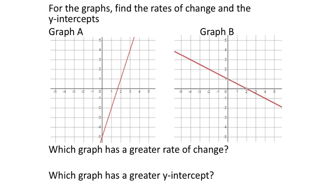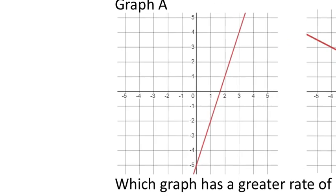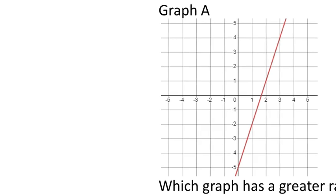We want to find the rates of change for both graphs A and B. These are straight lines, so no interval is given—the slope is the same everywhere on straight lines. We still need two ordered pairs on the graph. Let's start with graph A and the rate of change.